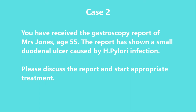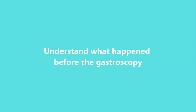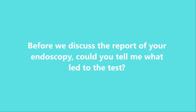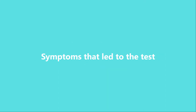The second case involves interpreting a report and discussing management with the patient. You have received a gastroscopy report of Mrs. Jones, age 55. The report has shown a small duodenal ulcer caused by H. pylori infection. Please discuss the report and start appropriate treatment. In this scenario we need to explain the diagnosis and treatment to the patient. Start by taking a brief history to help you understand what happened before the gastroscopy: 'Before we discuss the report of your endoscopy, could you tell me what led to the test, Mrs. Jones?' This allows the patient to tell you about the symptoms they have experienced.